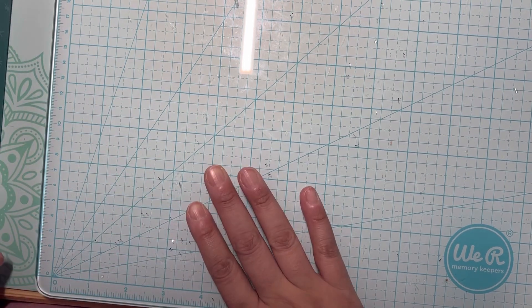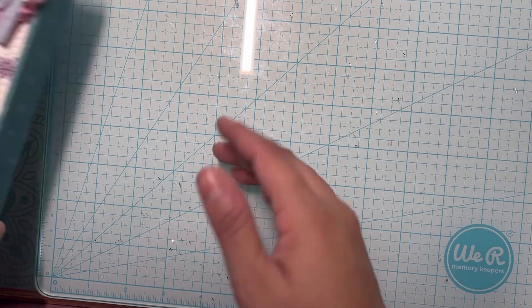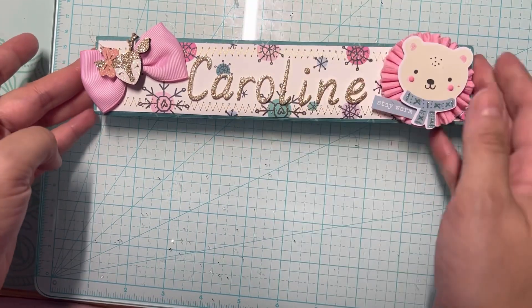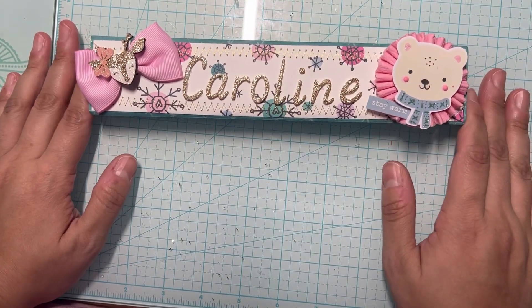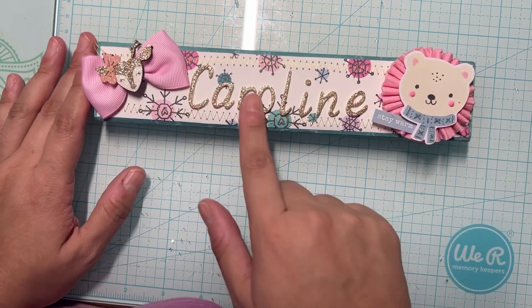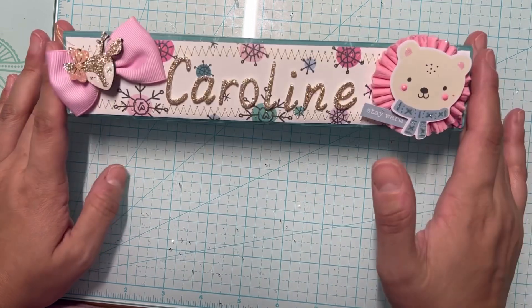So this is what I made. This is the slim pill embellishment box from the Dollar Tree and I decorated it using the Feeling Frosty paper by Simple Stories.